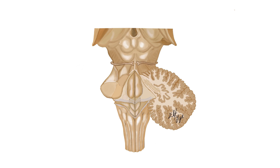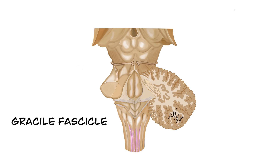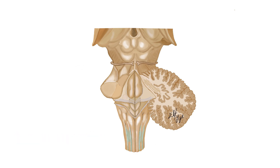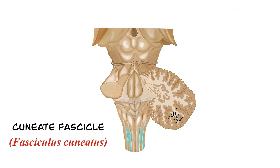The posterior intermediate sulcus divides the funiculus posterior into two lobes. The inner division is called the gracile fascicle, referred to as fasciculus gracilis in Latin — gracile means slender. The other division is called the cuneate fascicle, referred to as fasciculus cuneatus in Latin. Cuneatus means wedge.